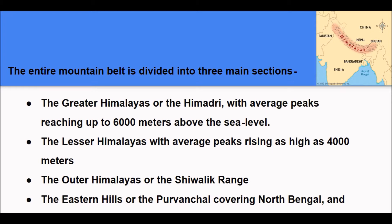The Himadri range is formidable and snowbound throughout the year. It is found with a number of glaciers, and glaciation is the most influential process accounting for the giant topography. This range is mainly composed of crystalline and metamorphic rocks such as granites, schists and gneiss.